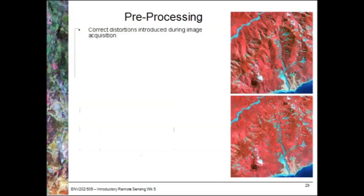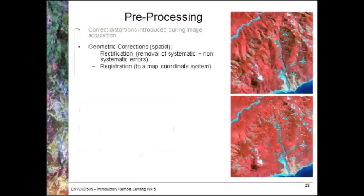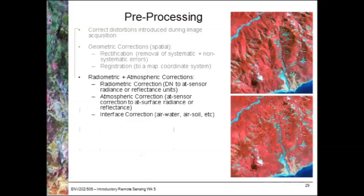With pre-processing, we need to correct distortions that have been introduced during image acquisition. Geometric corrections, or spatial corrections, give us information about where the image has been acquired, and will remove things like roll, pitch, or yaw distortions from an airborne camera system. Radiometric and atmospheric corrections, on the other hand, involve the conversion of digital numbers to at-sensor radiance or reflectance units, and correction of atmospheric attenuation, giving us a more pure signal without the atmosphere's contribution.